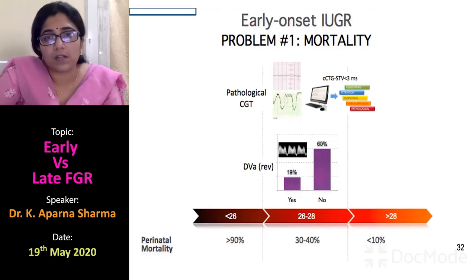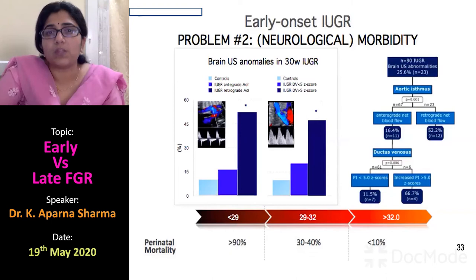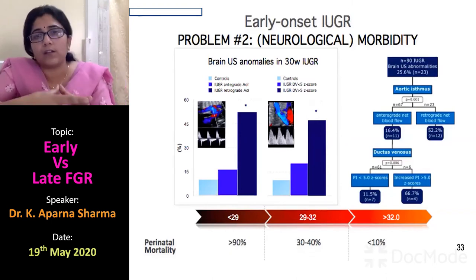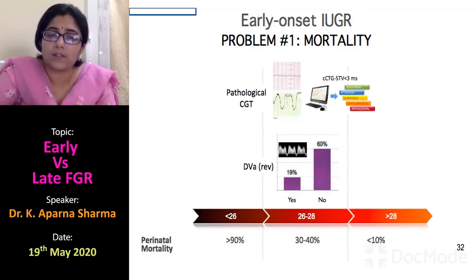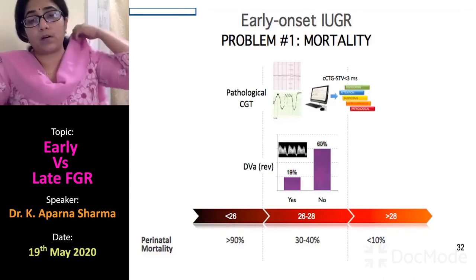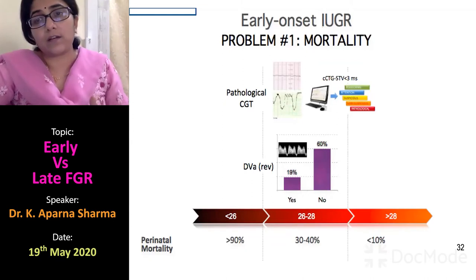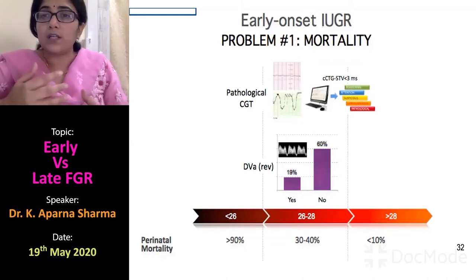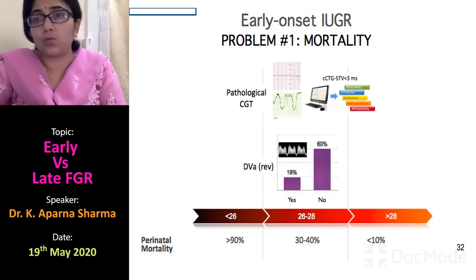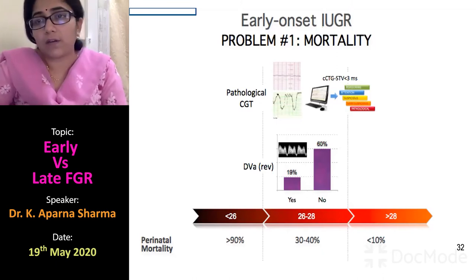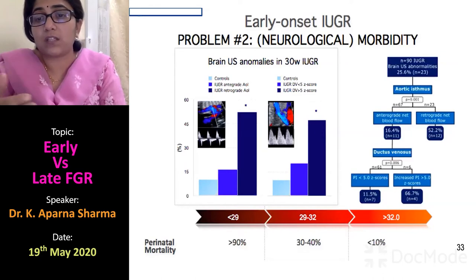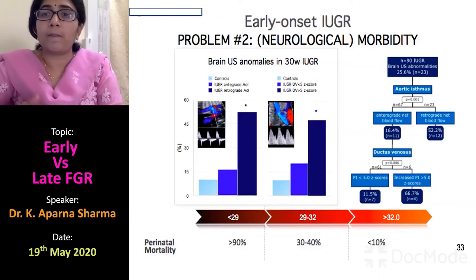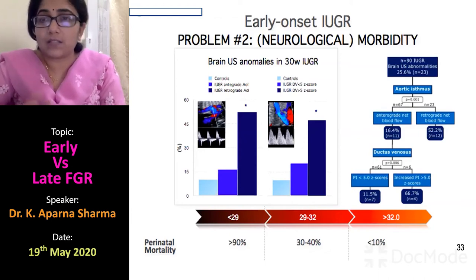The main problem with early onset IUGR is mortality and neurological morbidity. Perinatal mortality at less than 26 weeks is more than 90%. At more than 28 weeks, it drops dramatically to less than 10%, meaning even one day's gain improves survival by more than 2%. Neurological morbidity at less than 29 weeks is 90%, while at more than 32 weeks it is less than 10%. Hence, magnesium sulfate for neuroprotection is indicated at less than 32 weeks.